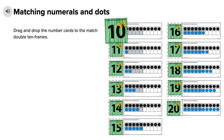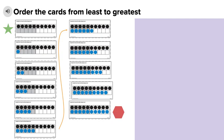Move the number cards to match the double 10 frames. Put the double 10 frames in order from least to greatest.